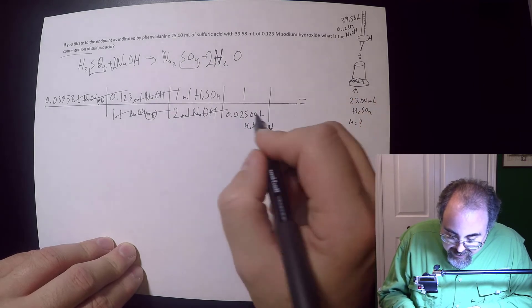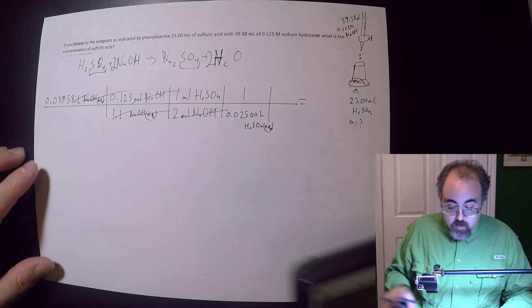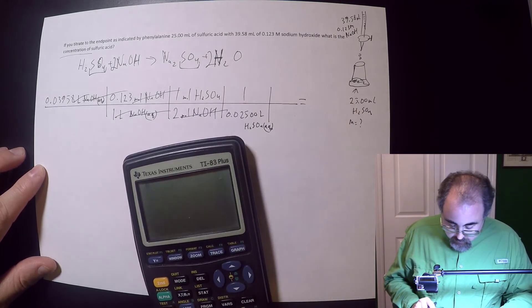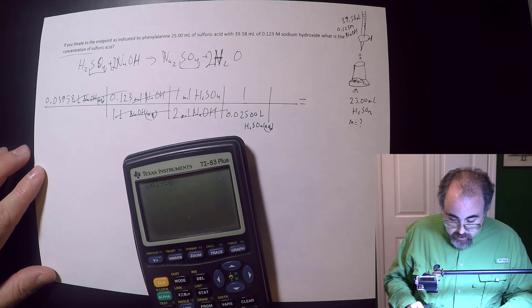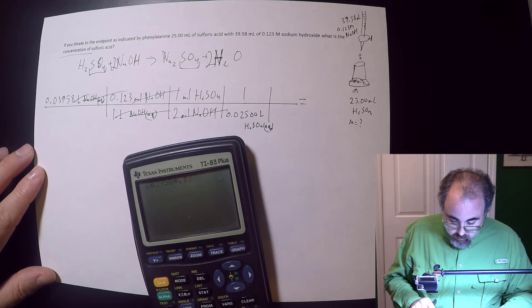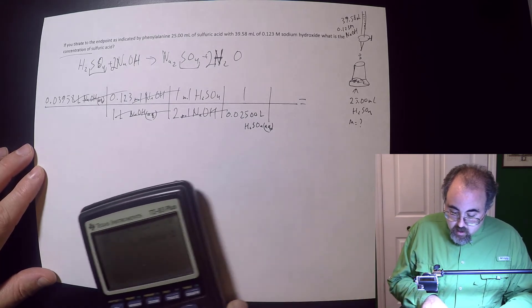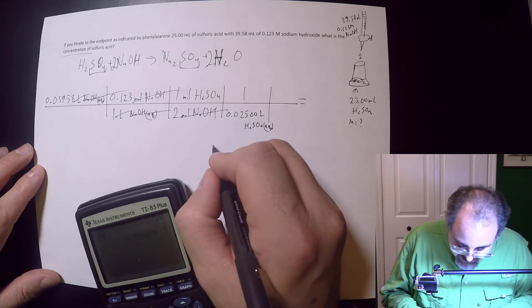That doesn't cancel with anything because I'm adding a fact. And then what I get will be moles over liters and that's exactly what I want. So I take 0.03958, multiply that by 0.123, divide that by 2, divide that by 0.025.